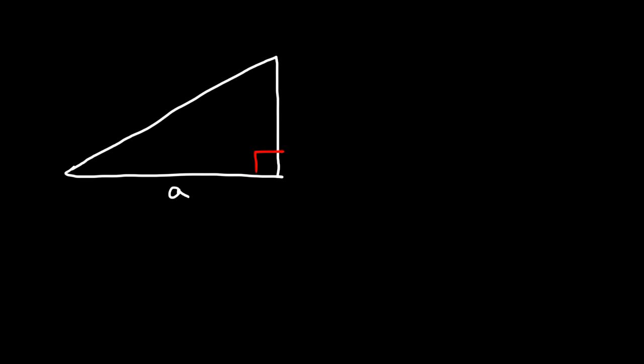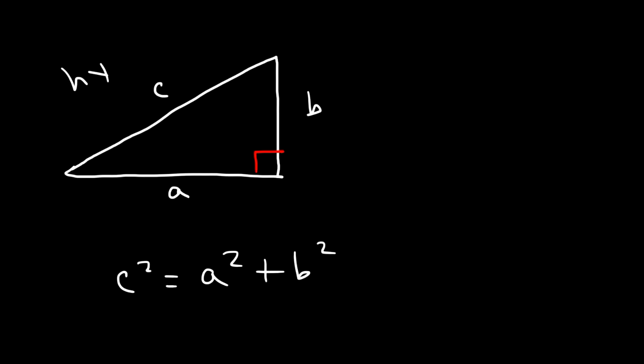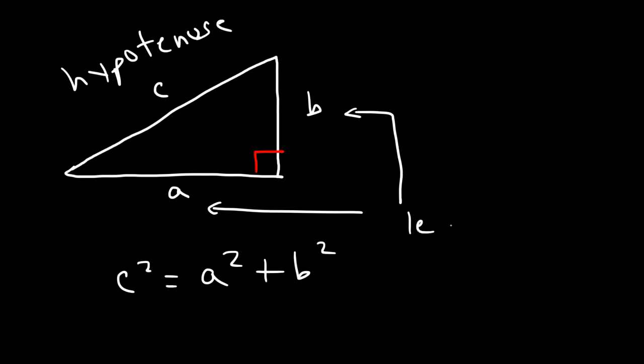In this video we're going to go over the Pythagorean Theorem and talk about how to use it to solve problems associated with geometry. So let's go over the formula first. If we have a right triangle where this side is called a, b, and the hypotenuse is c, then the formula is c squared is equal to a squared plus b squared. c is the hypotenuse — it's the longest of the three sides — and a and b are known as the legs of the right triangle.